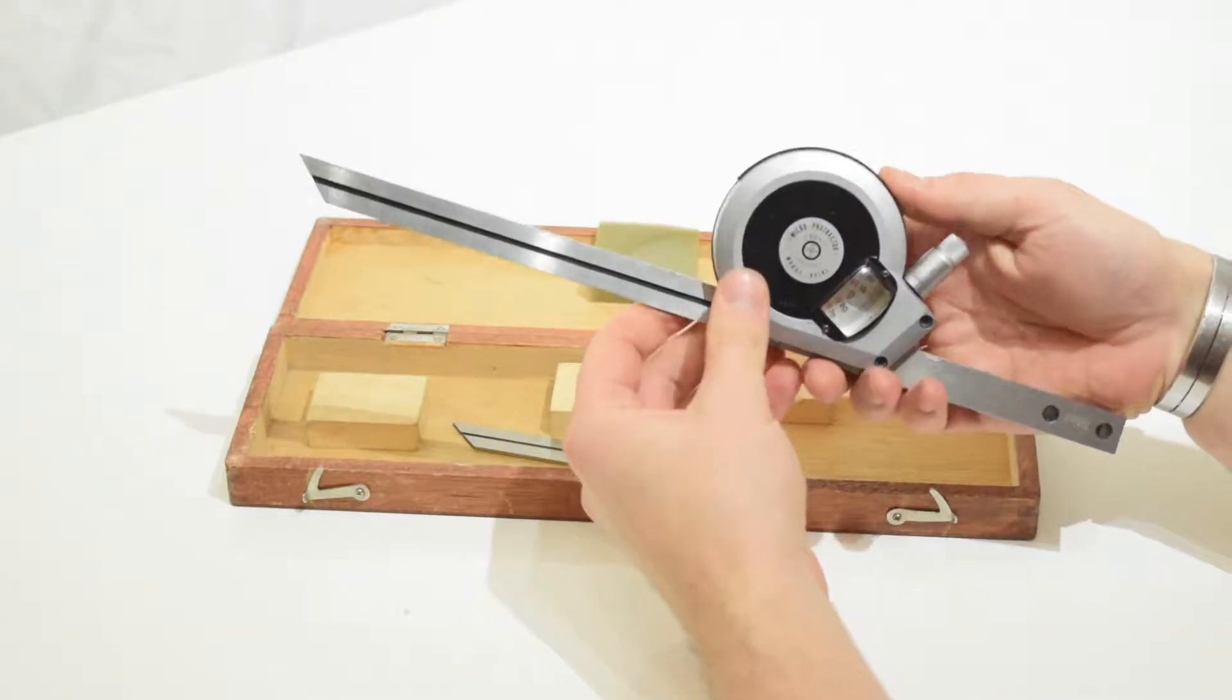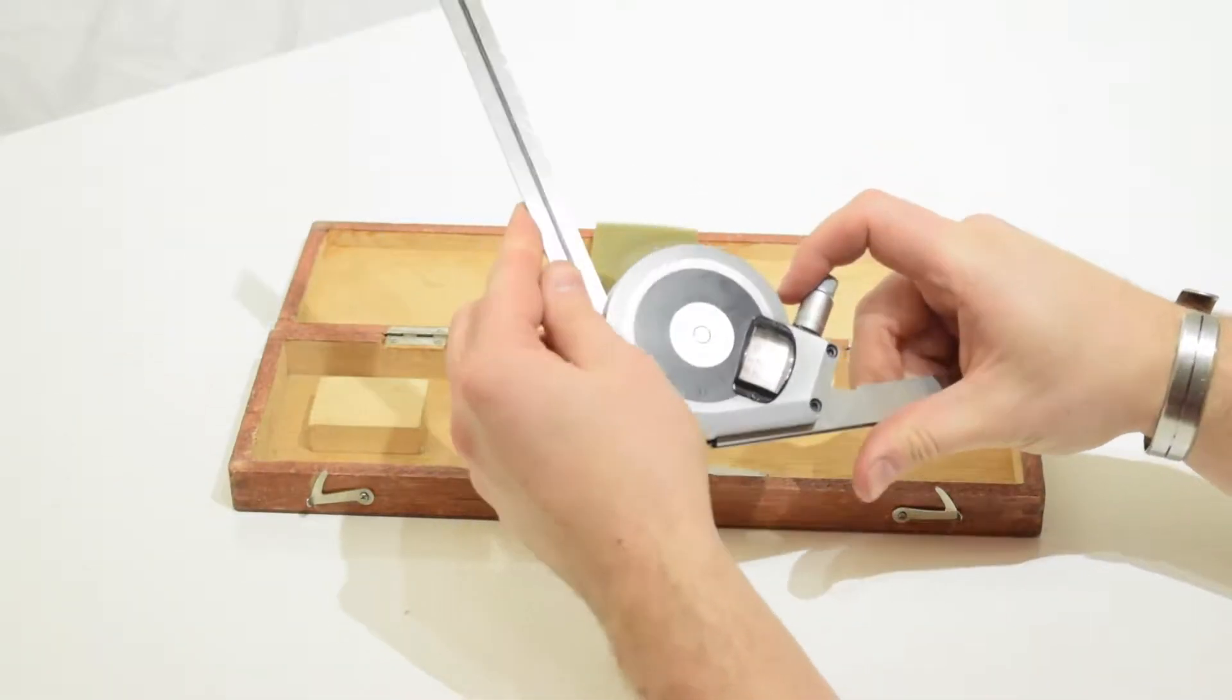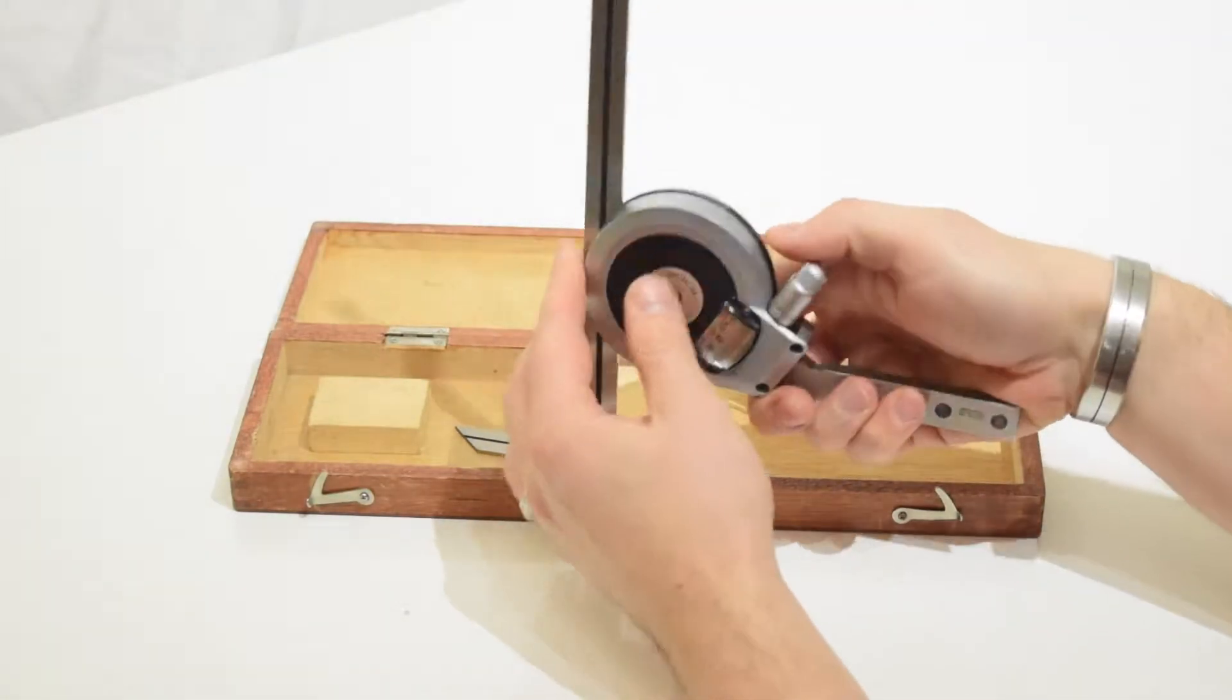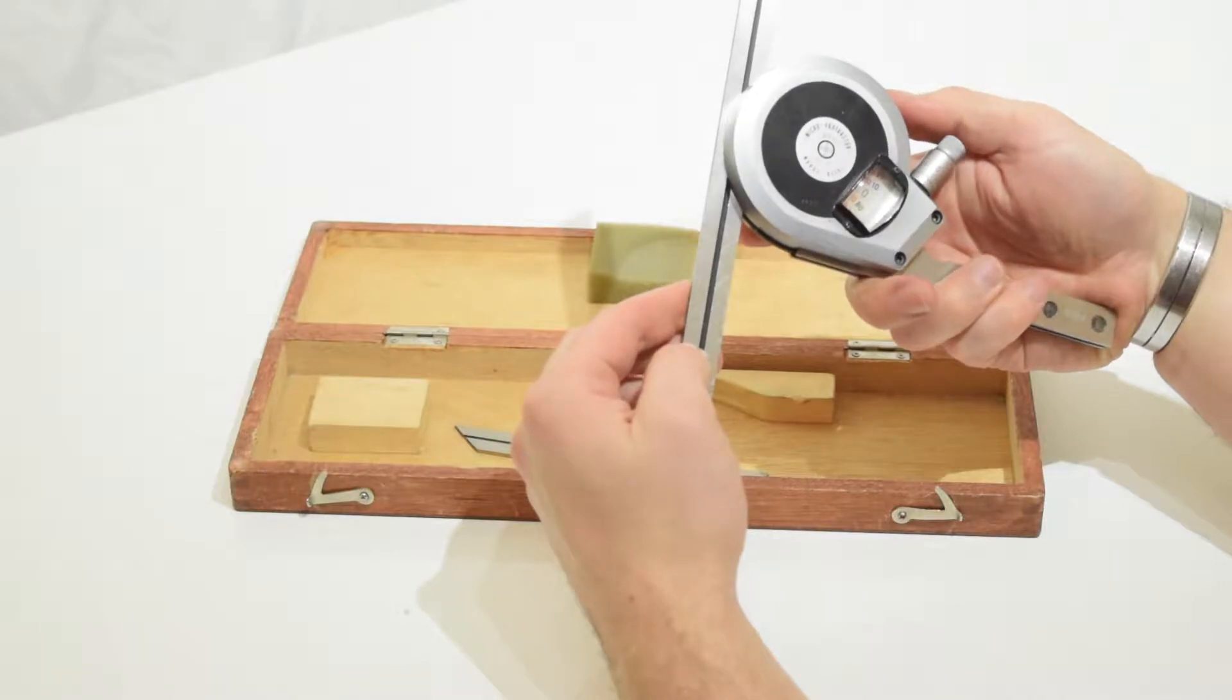You can see here I've just switched out the straight edges. This protractor comes with a 150mm and a 300mm blade straight edge. And as you saw, it's very easy to change between the two.